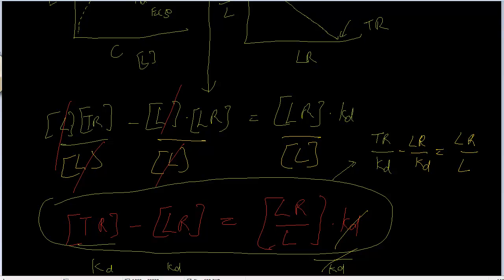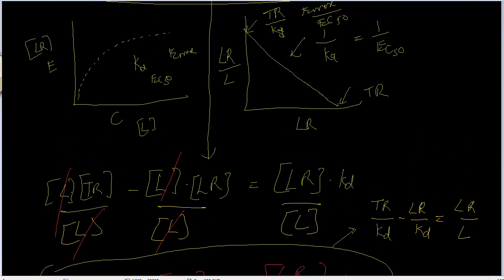Can you simply convert this equation into a linear equation? What is this LR over L? If I divide ligand-receptor complex over ligand, that is nothing but effect over concentration. So that is Y. And the slope is always the rate constant, so it's 1 over KD.